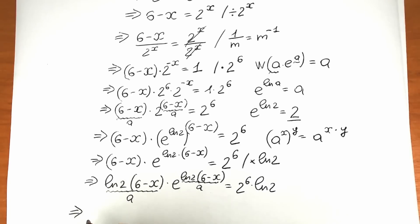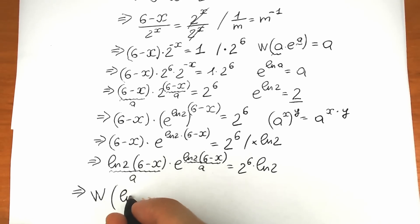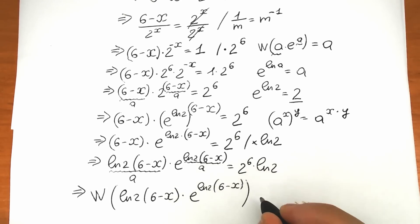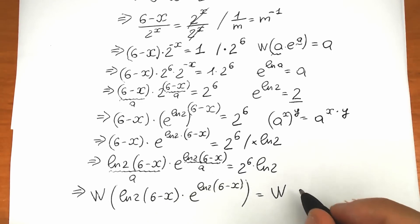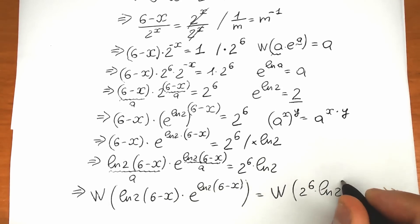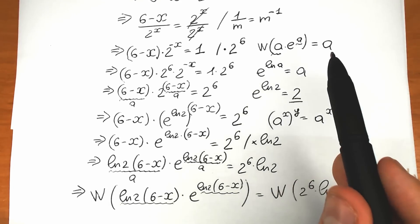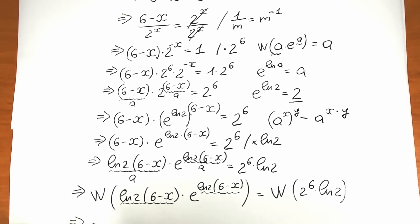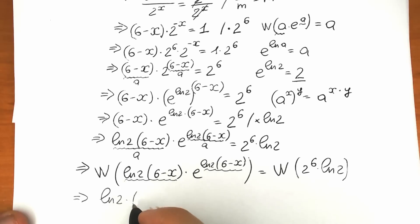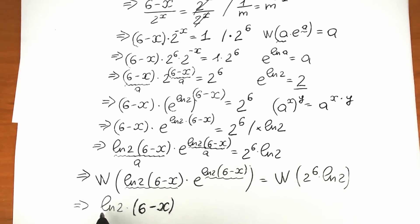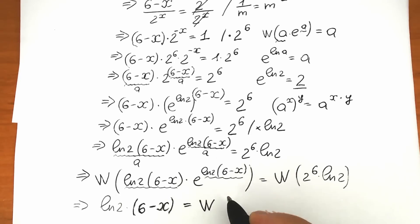Applying the Lambert W function to both sides: W of [ln(2) times (6 minus x) times e^(ln 2 times (6 minus x))] on the left equals W of [2^6 times ln 2] on the right. This gives us ln(2) times (6 minus x) equal to W(2^6 times ln 2). Now let's rewrite 2^6 in a different way — as 2^2 times 2^4.